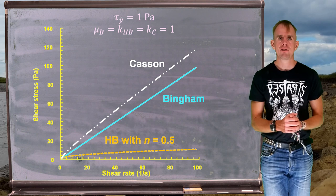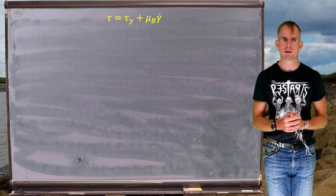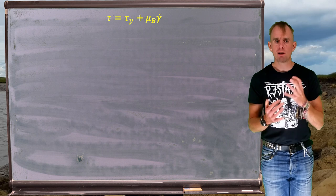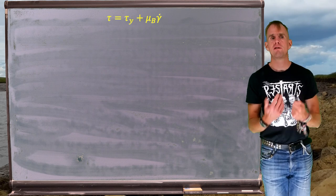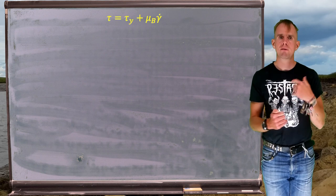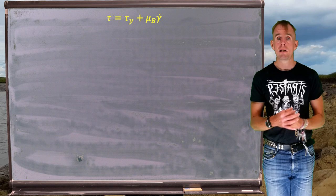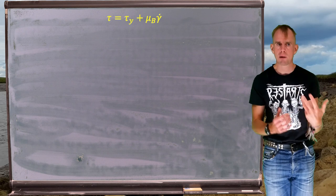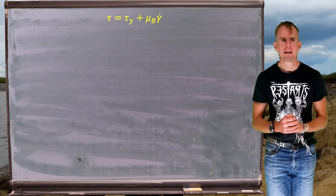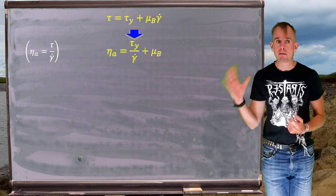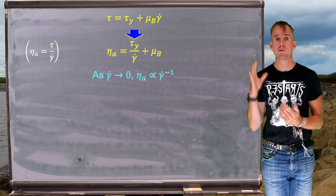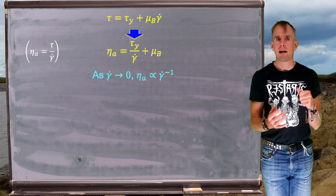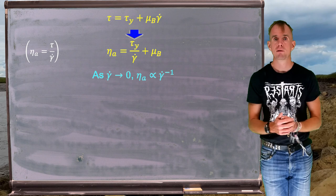So there we have three constitutive laws. Now let's look at a very useful piece of information you can glean from rheometry data. The rheometry data in question is going to be apparent viscosity as a function of shear rate curves. So let's start by looking at a Bingham fluid. Tau equals tau y plus mu b gamma dot. Let's remind ourselves that my apparent viscosity is shear stress divided by shear rate. And so dividing through the equation on the first line of the board I get a formulation for apparent viscosity. Eta a equals tau y over gamma dot plus my Bingham viscosity mu b.